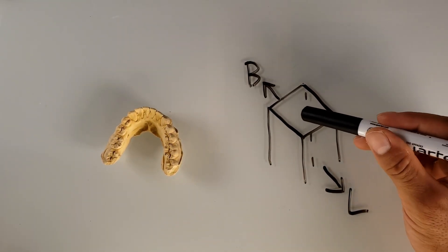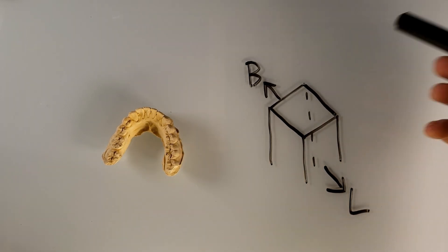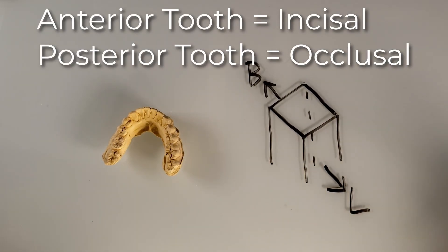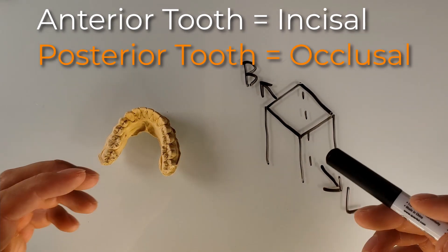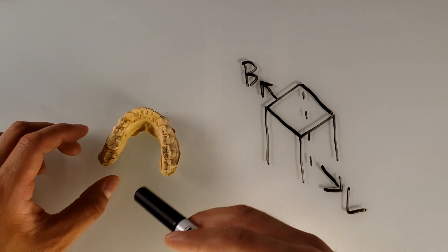Now, what about the top? The top for an anterior tooth is going to be referred to as the incisal. But here, it'll be the occlusal because it's before the canine.